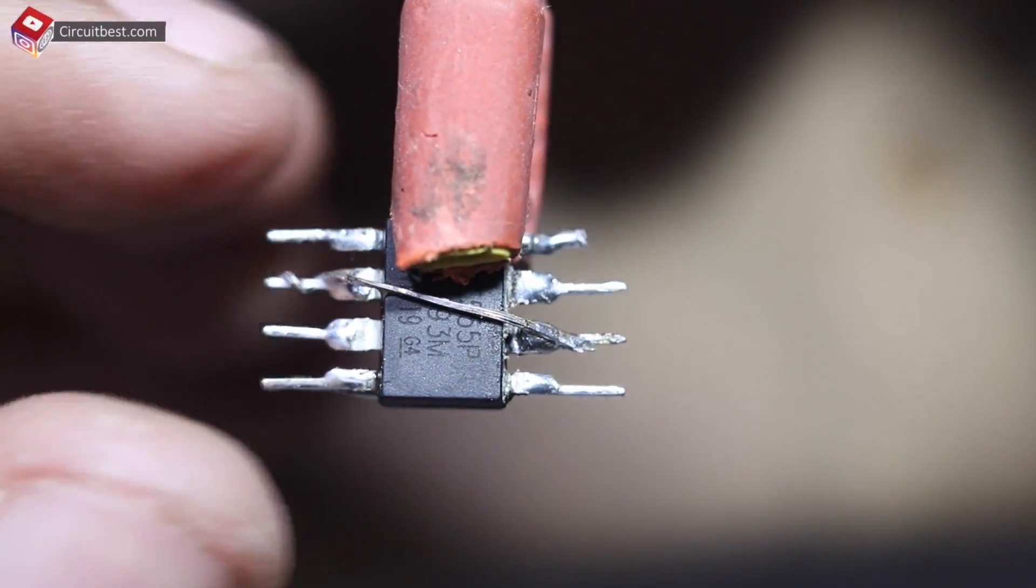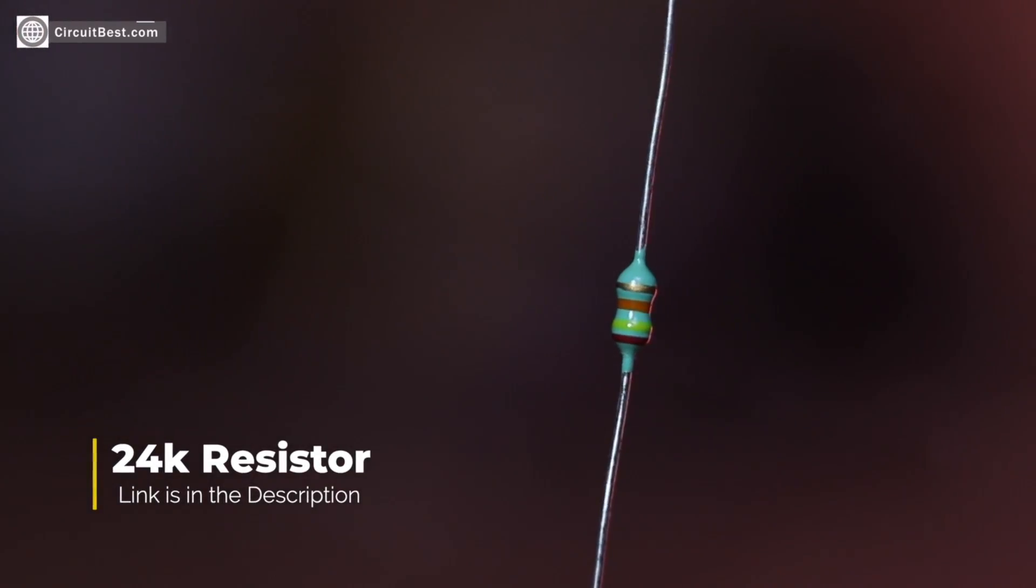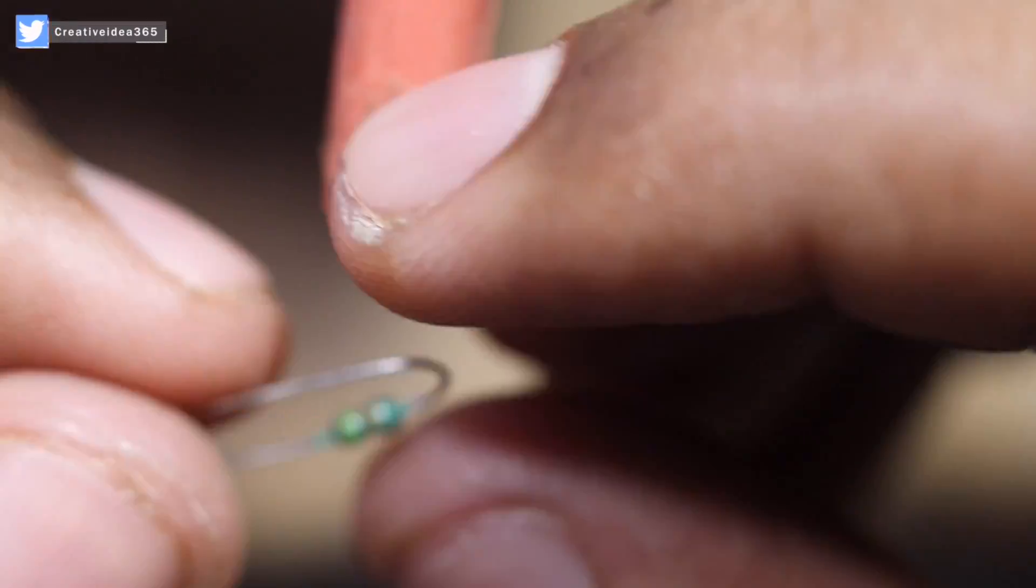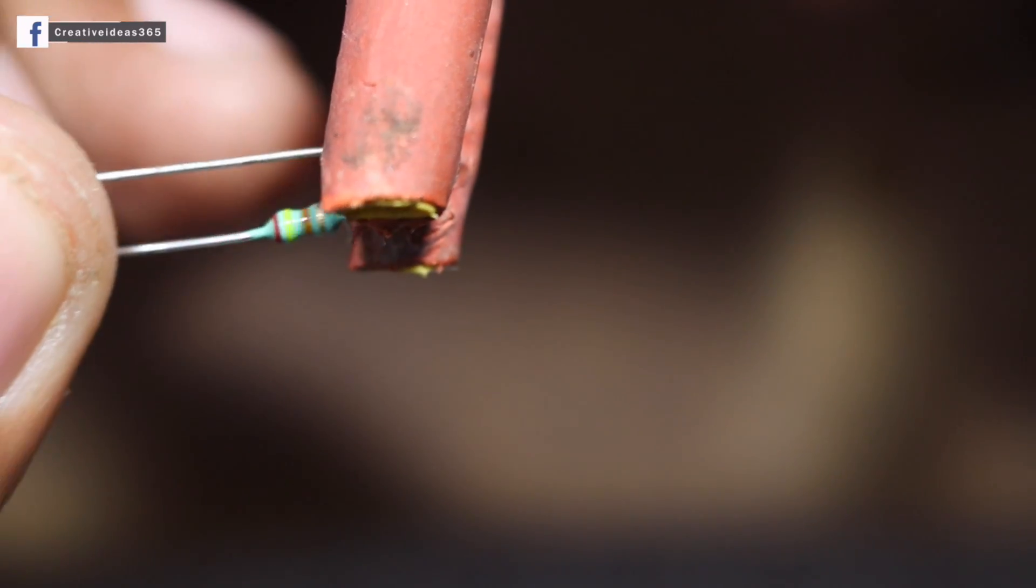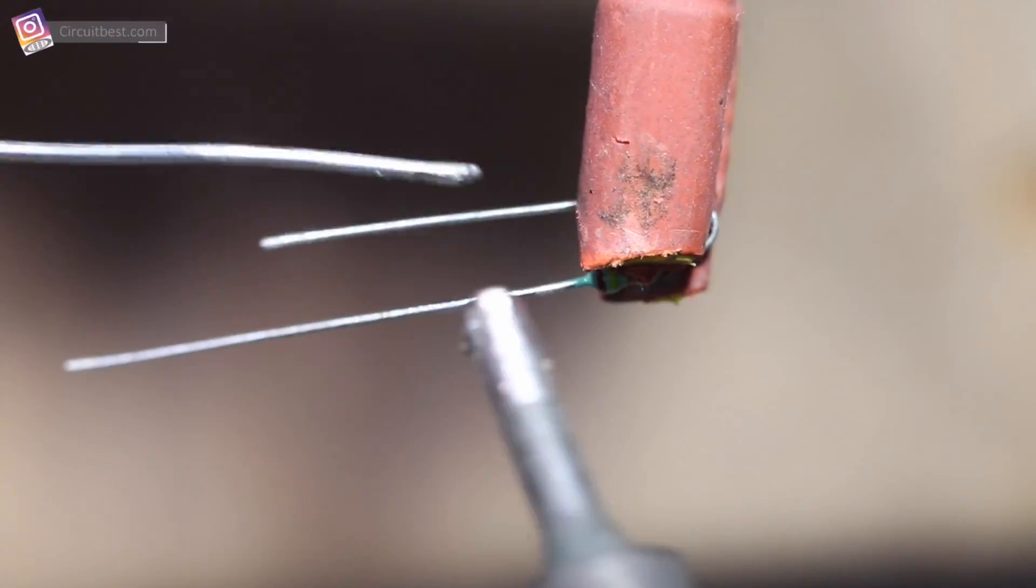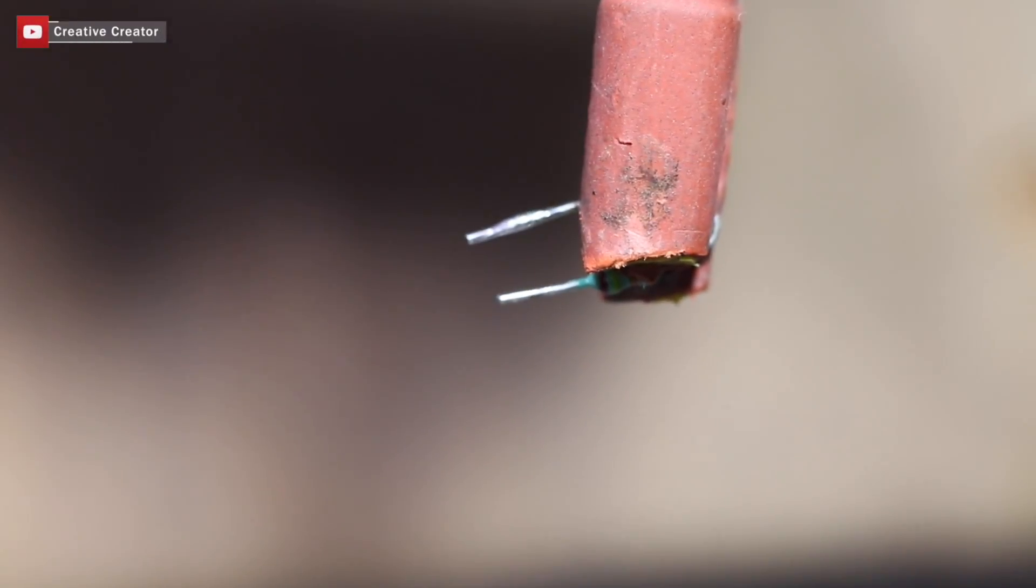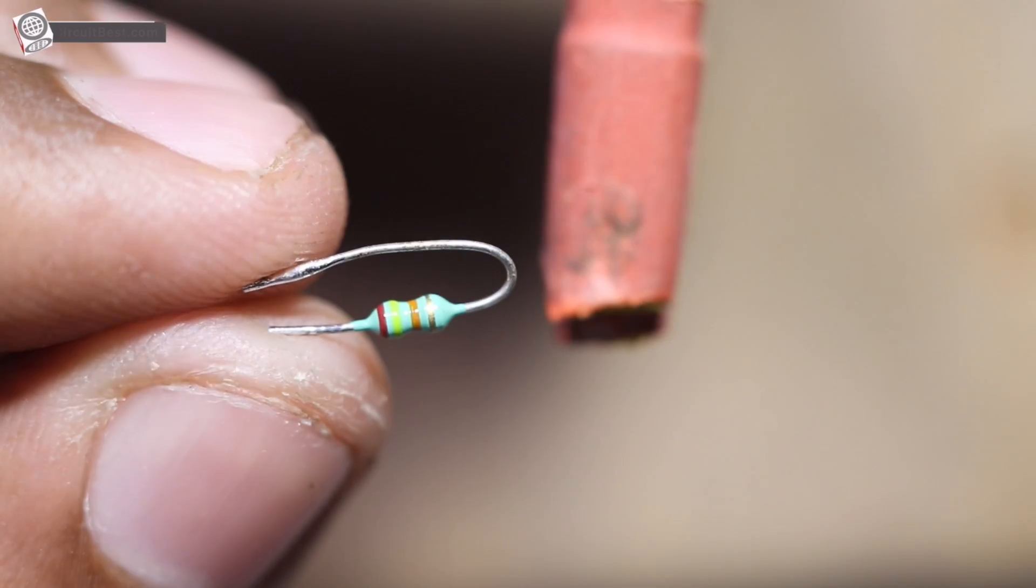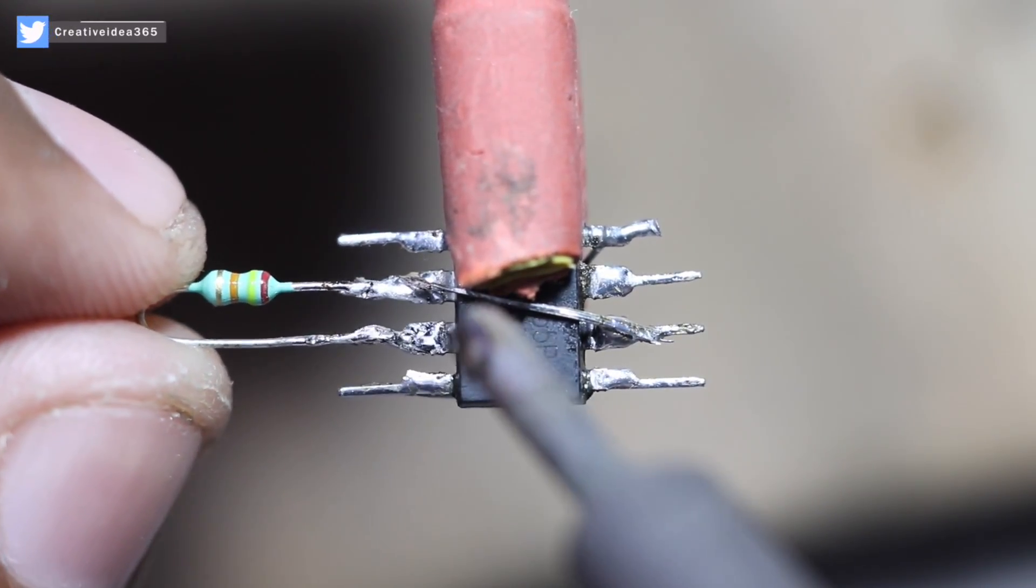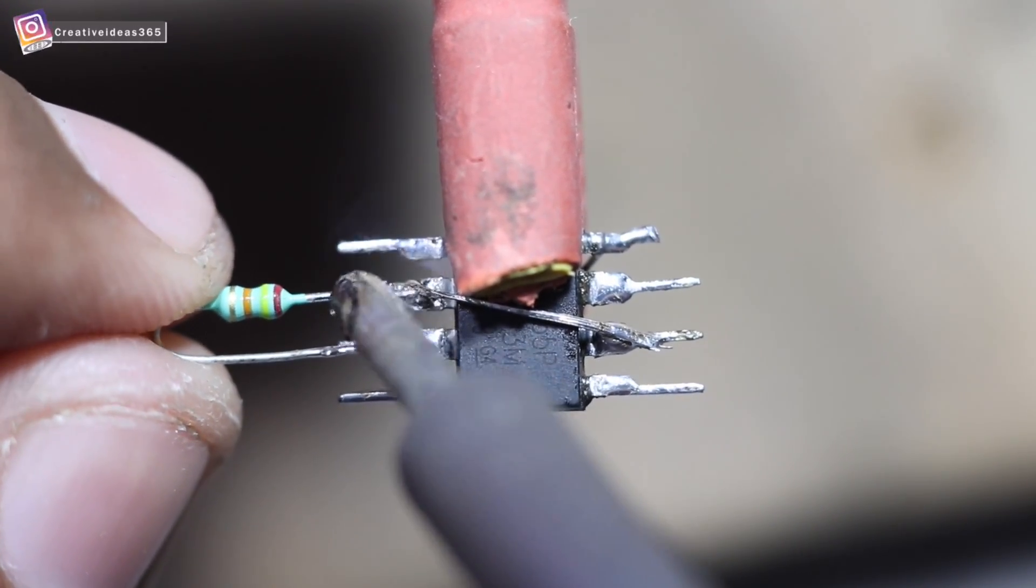Now connect IC pin 3. In the same way I will pre-solder all the components for better solder joints. Now connect the 24k resistor with IC pin 2 and pin 3.